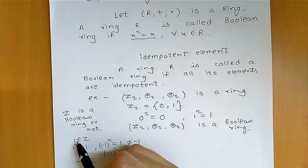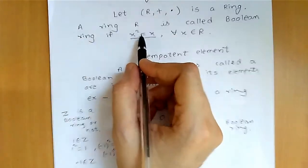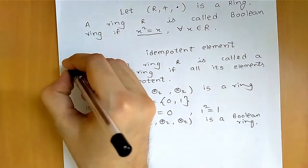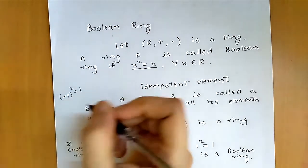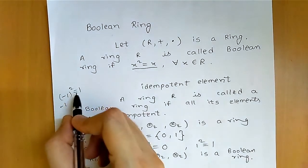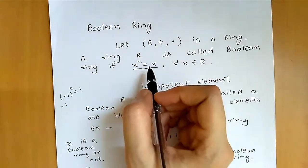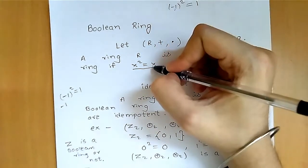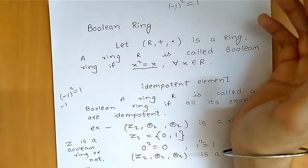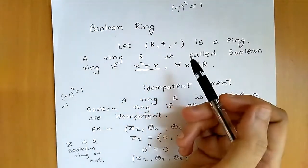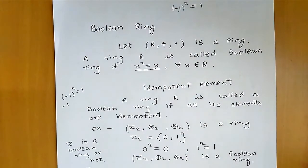But now take another element: minus 1, which also belongs to Z. Minus 1 does not satisfy the property because minus 1 squared equals 1, not minus 1. Therefore, minus 1 does not satisfy x squared equals x. Since we found one element in Z that does not satisfy this property, the set of integers is not a Boolean ring.